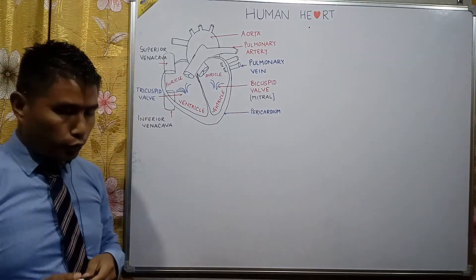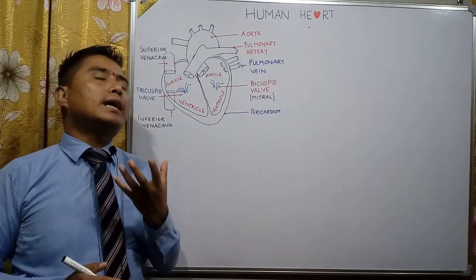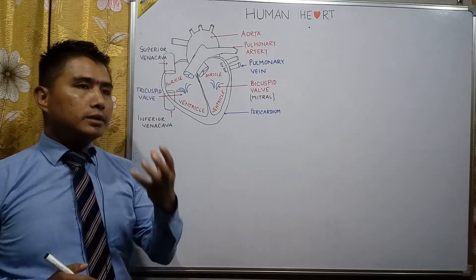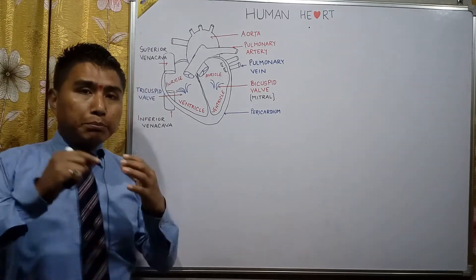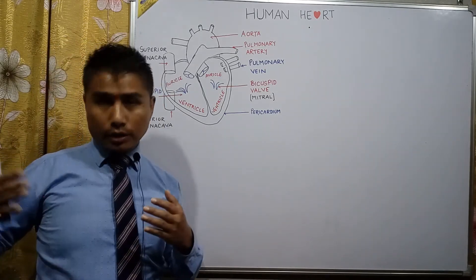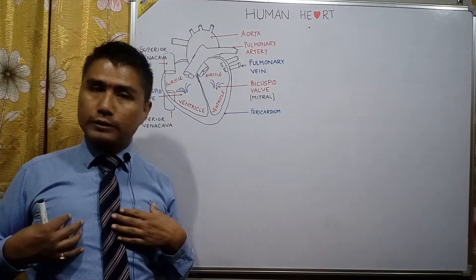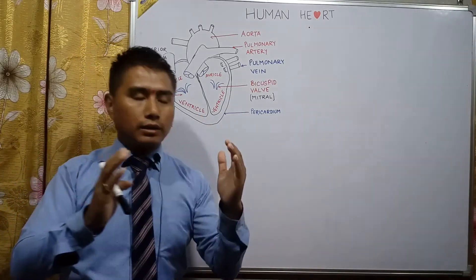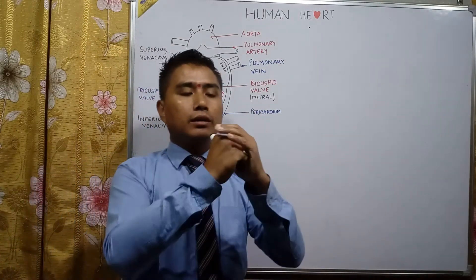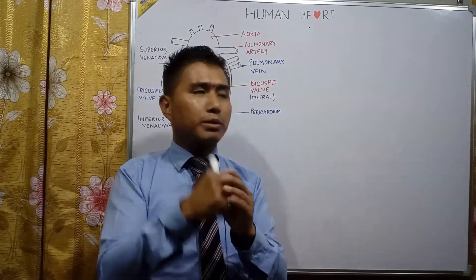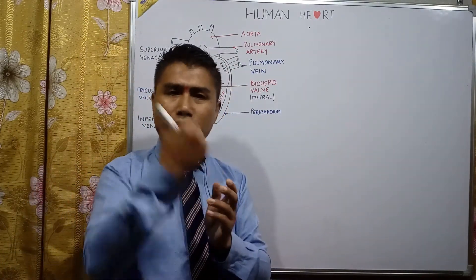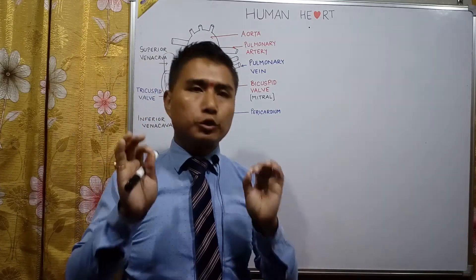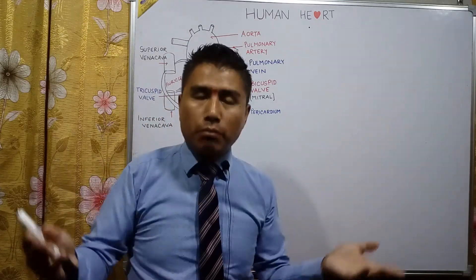The human heart acts as a pumping organ and it is located in between the right and the left lungs. It is normally the size of a human fist. The main function of the human heart is to pump the blood to different parts of the body.